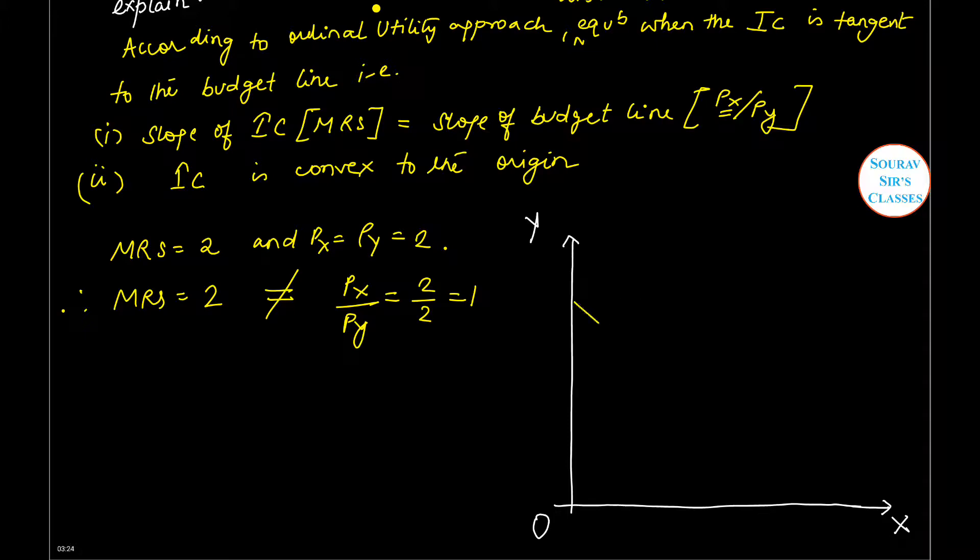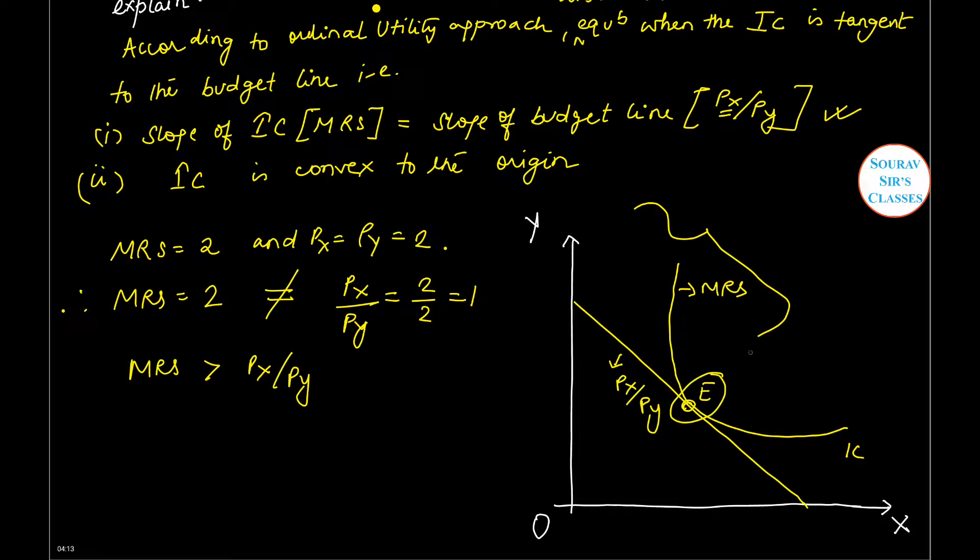If I draw a curve like this, this is my budget line with a slope of Px/Py, and this is my IC. At this particular point, slope of IC equals slope of budget line, meaning this condition is satisfied and it is already convex to the origin. Here we find MRS is greater than Px/Py. This region above E denotes MRS is greater than Px/Py.